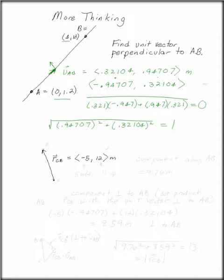Before, we found rcb, the position vector from point C up to point B. We found the position vector of that was negative 5, 12.